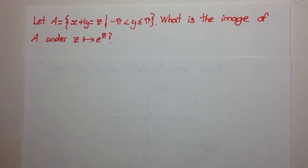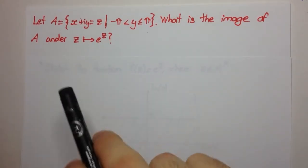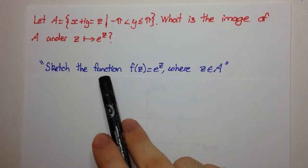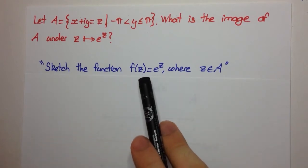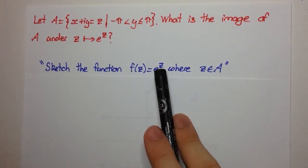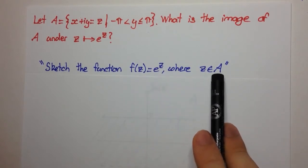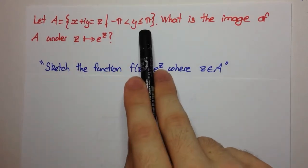Complex mappings are just thinking of functions in terms of complex numbers. So this is a complex function. We're trying to sketch F of Z equals e to the Z, where Z is an element from A — so Z can only take values from the set A.